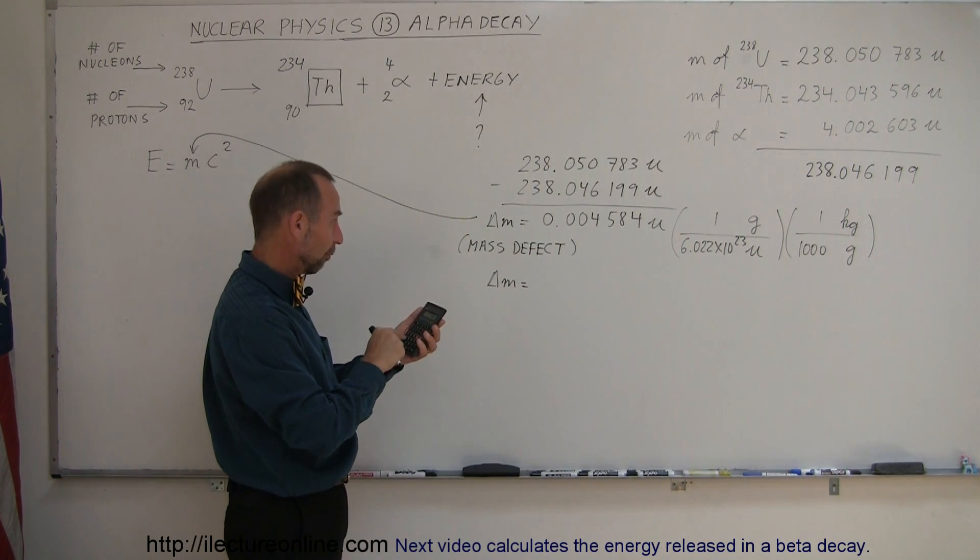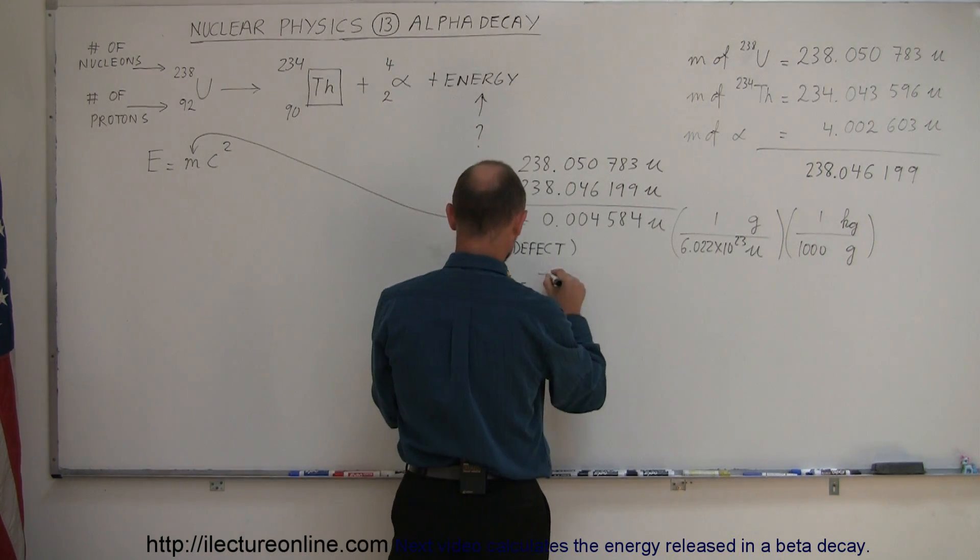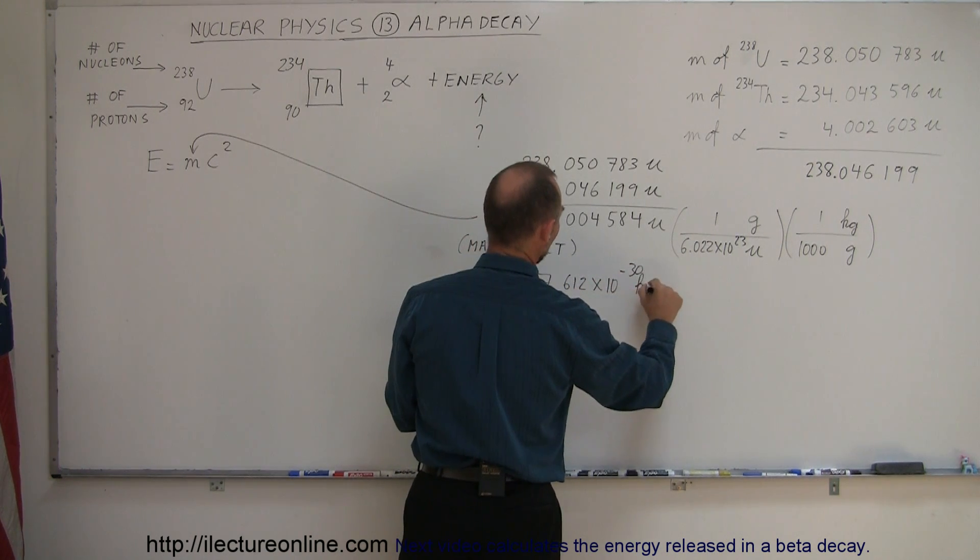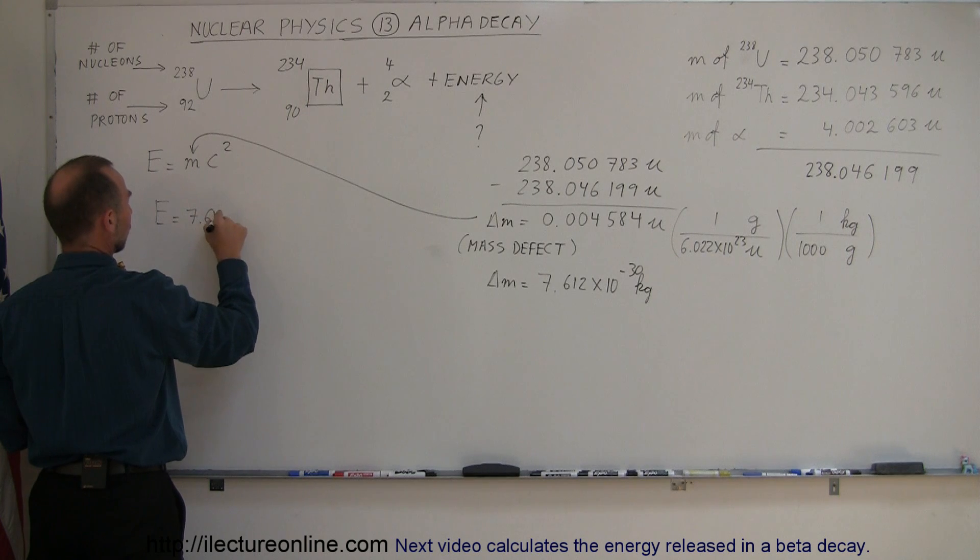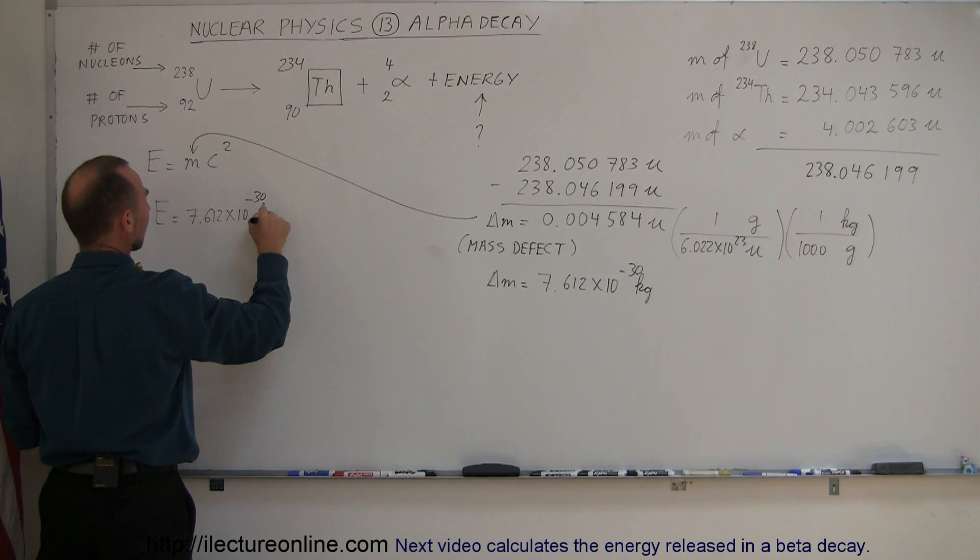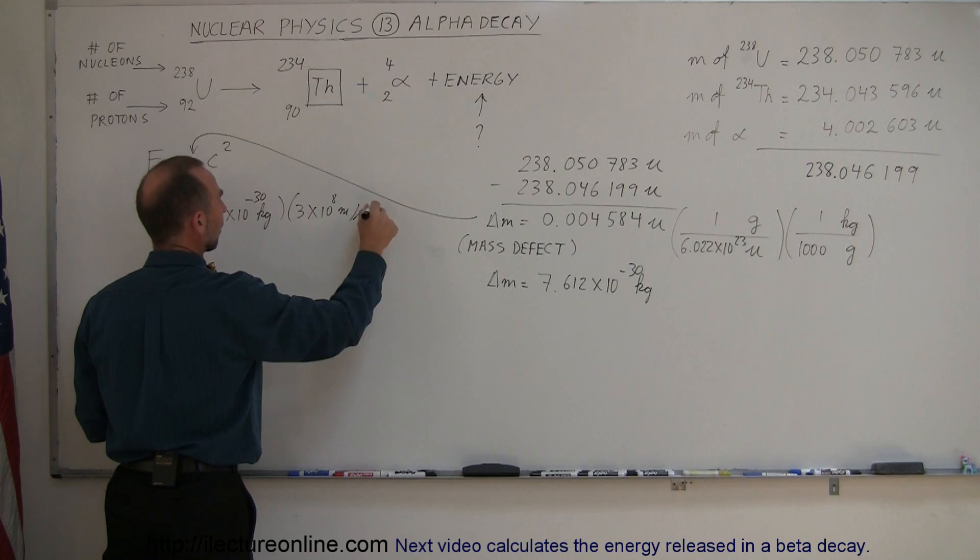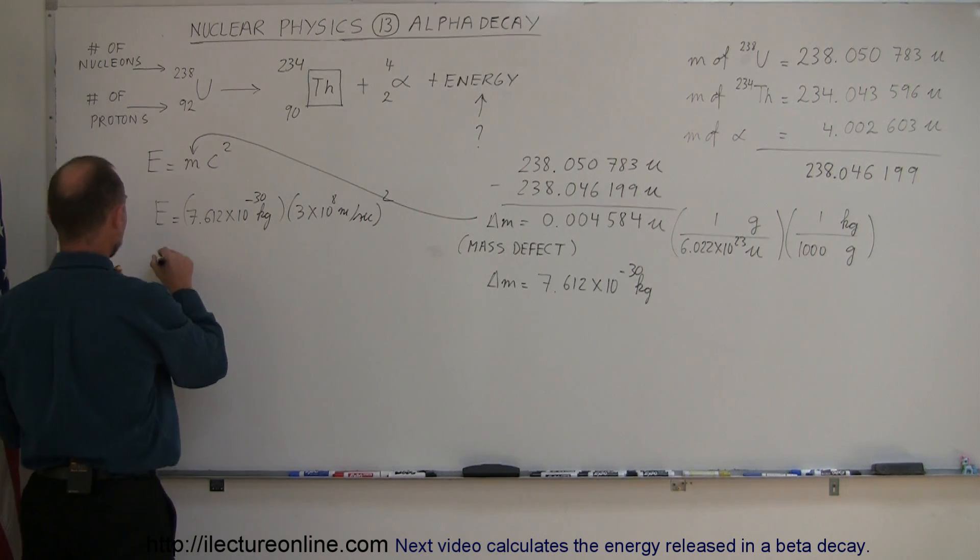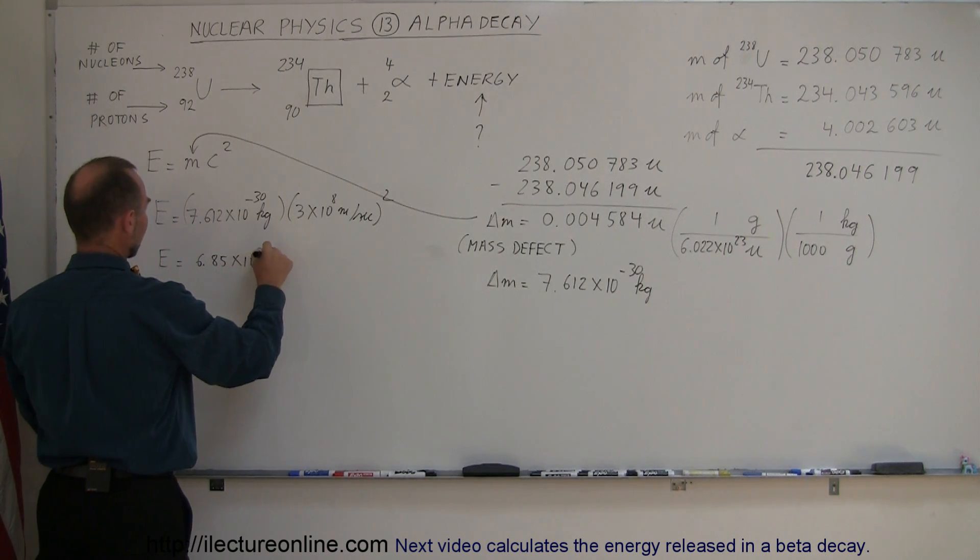So we have 0.004584 divided by 6.022 e to the 23rd divided by 1,000, and we get a mass defect of 7.612 times 10 to the minus 30th kilograms. We go ahead and plug that in here, and so now we have the energy released as 7.612 times 10 to the minus 30th kilograms times C squared. Of course, C is 3 times 10 to the 8th meters per second squared. If we now calculate that, we have an energy release of 6.85 times 10 to the minus 13 joules.